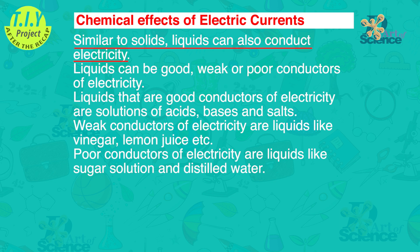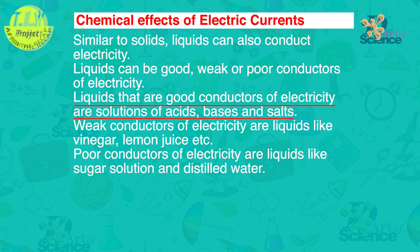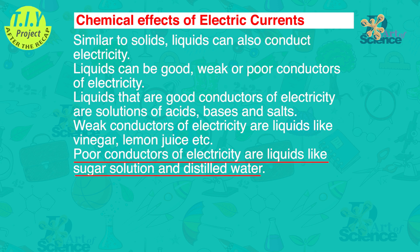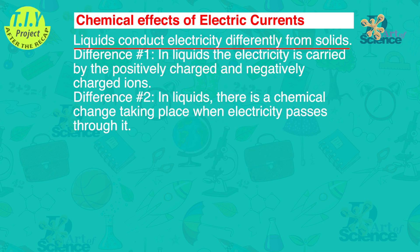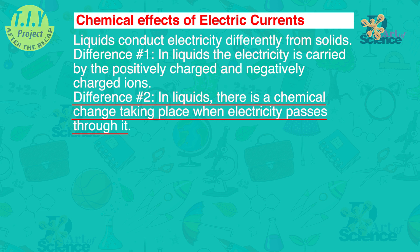Now let's do a recap. Similar to solids, liquids can also conduct electricity. Liquids can be good, weak, or poor conductors of electricity. Liquids that are good conductors of electricity are solutions of acids, bases, and salts. Weak conductors are liquids like vinegar and lemon juice. Poor or non-conducting liquids are things like sugar solution and distilled water. Liquids conduct electricity differently from solids: in liquids, electricity is carried by positively and negatively charged ions, and there is a chemical change taking place when electricity passes through them.